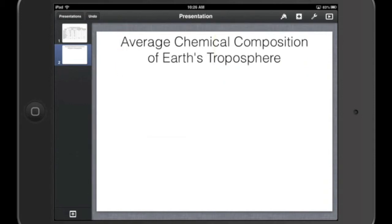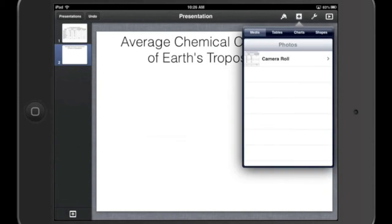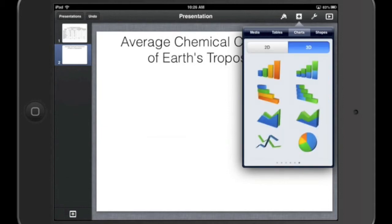Now I need to add my pie chart. So just like you would add any element to Keynote's slide, you hit the plus button up in the top right, and you can see your choices. I have media, tables, charts, and shapes. Of course, today we're doing a chart.